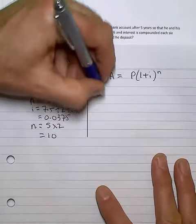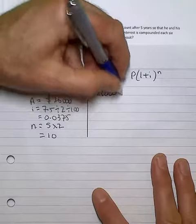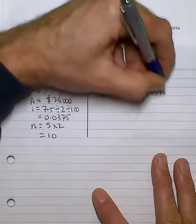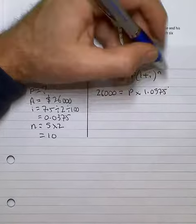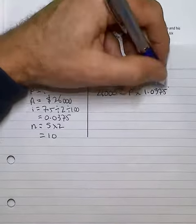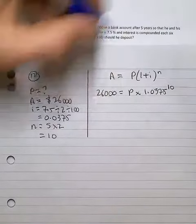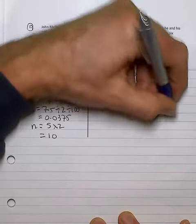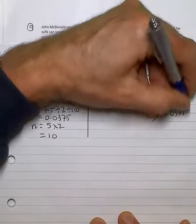I'll do the first line and transpose once I've got a line or two in. So P is $26,000 divided by 1.0375 to the power of 10.